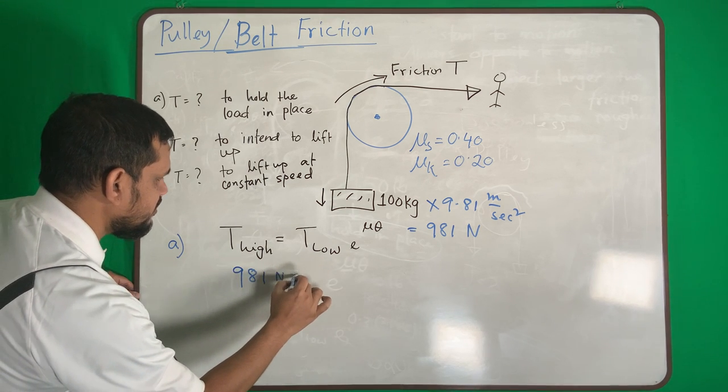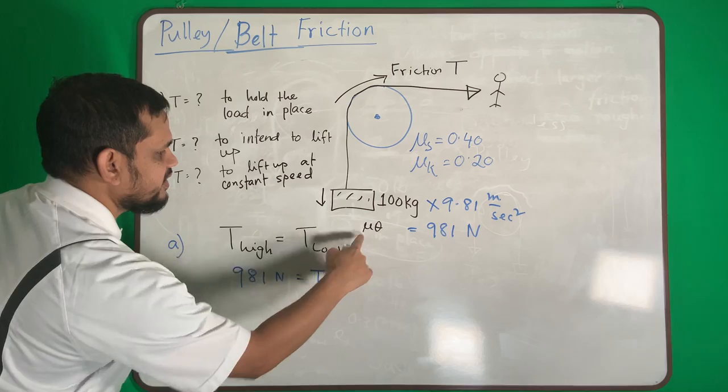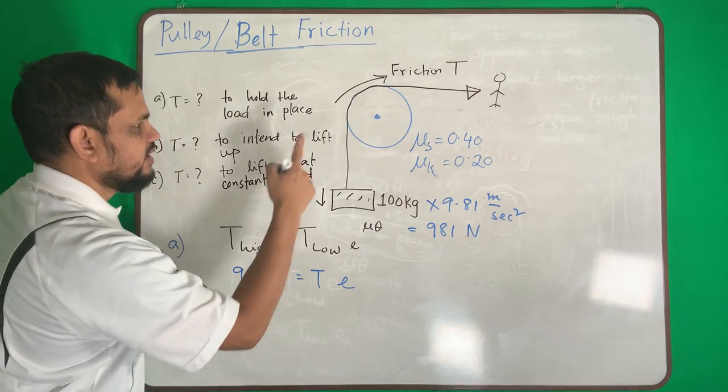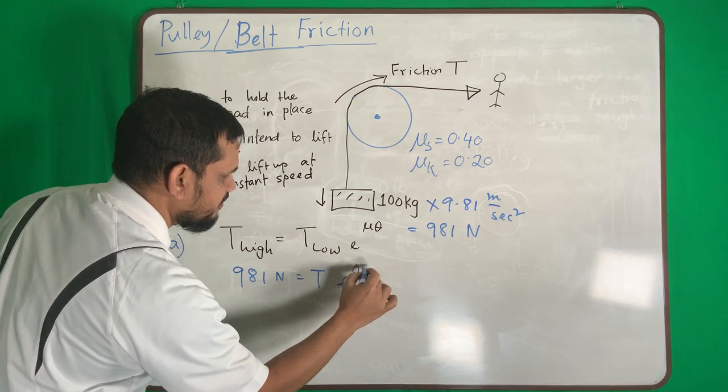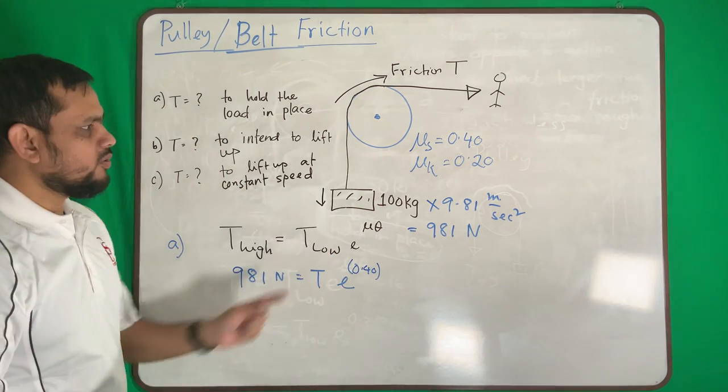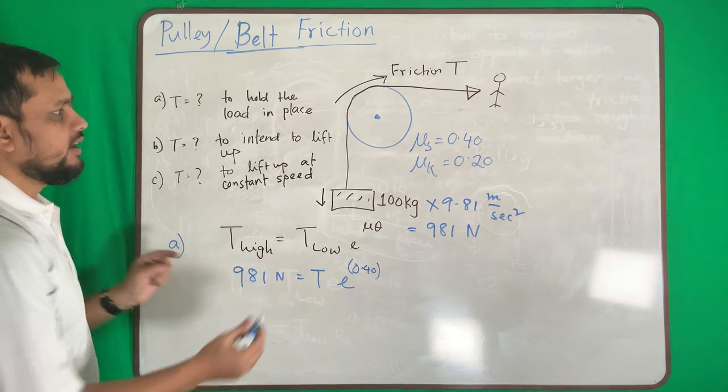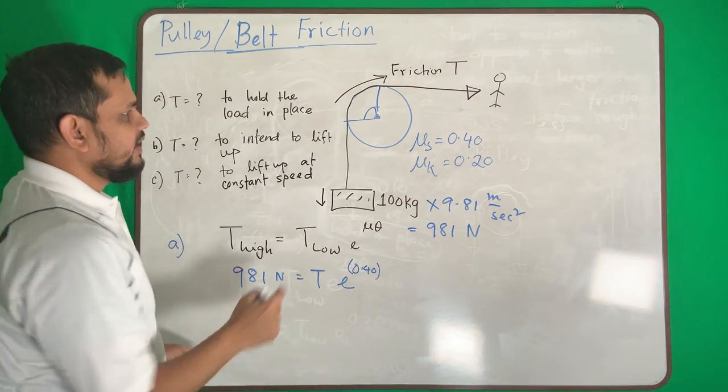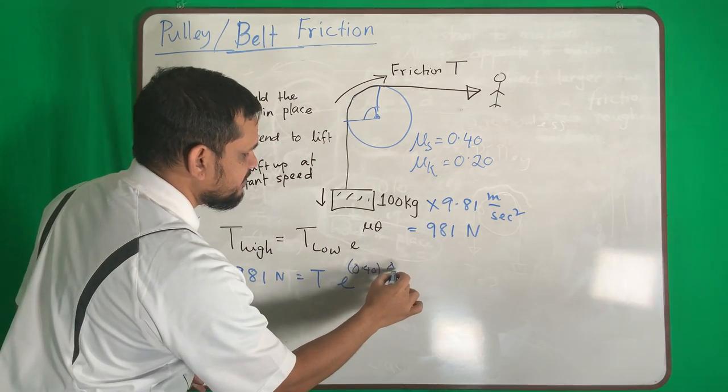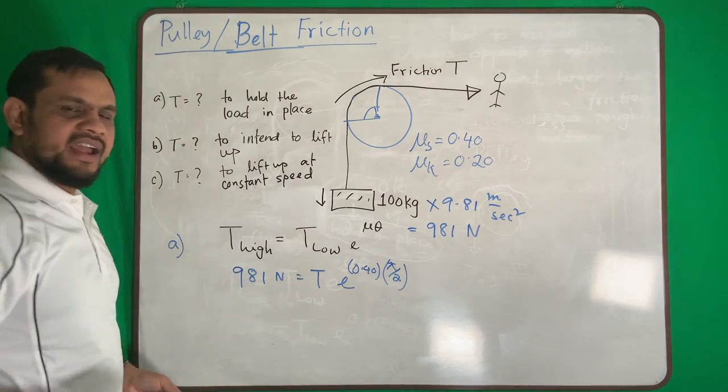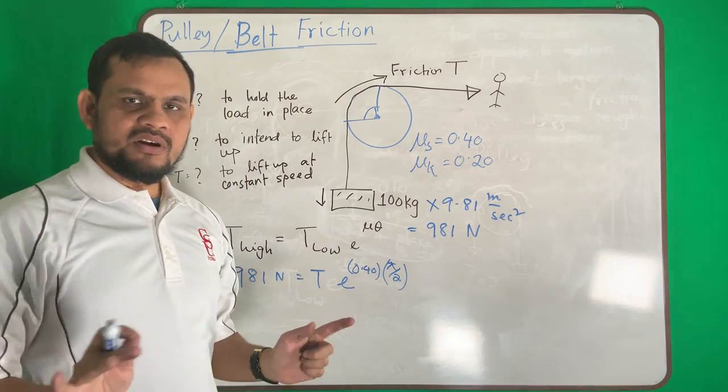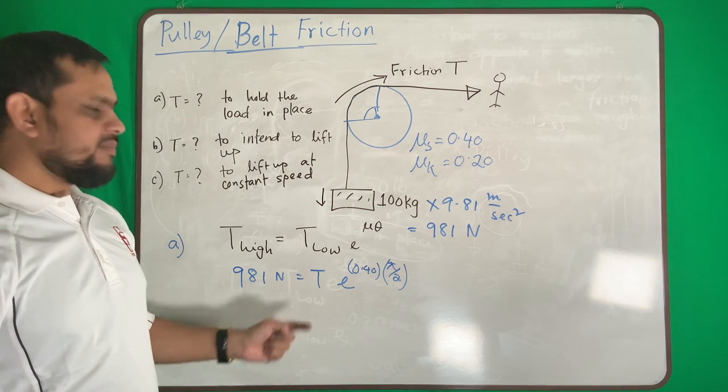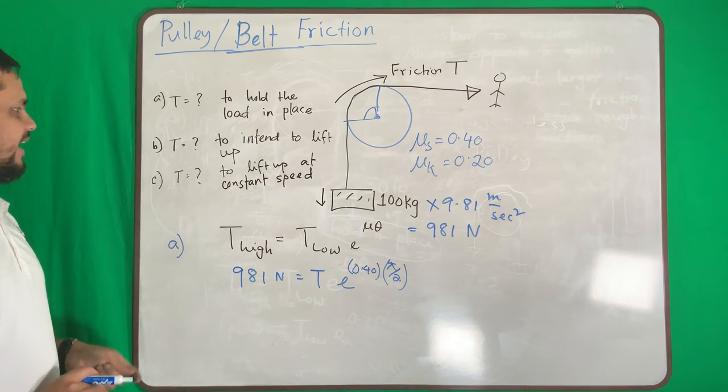981 Newton equals T times e to the power mu. What is mu? The body is not moving, I am holding it in place, so it is mu s, so 0.4, not 0.2. What is the theta, the angle subtended by the pulley? In this case it is 90 degrees. 90 means pi by 2, so angle will be in radians, not degrees. So now you can solve it.